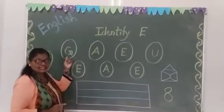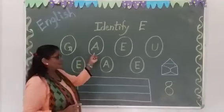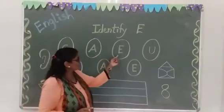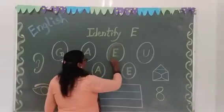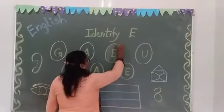So this letter is E? No. This letter is E? No. This letter is E? Yes. So we have to color the circle and we have to correct the person.